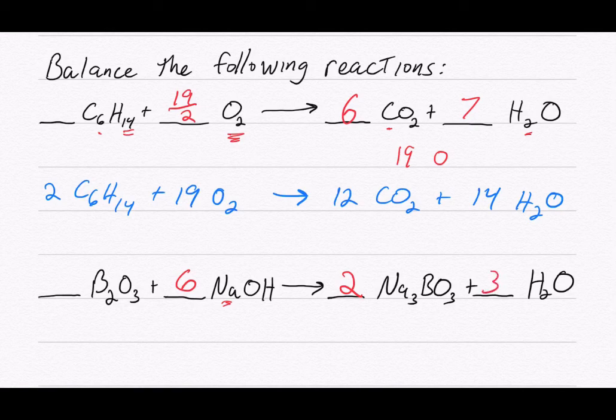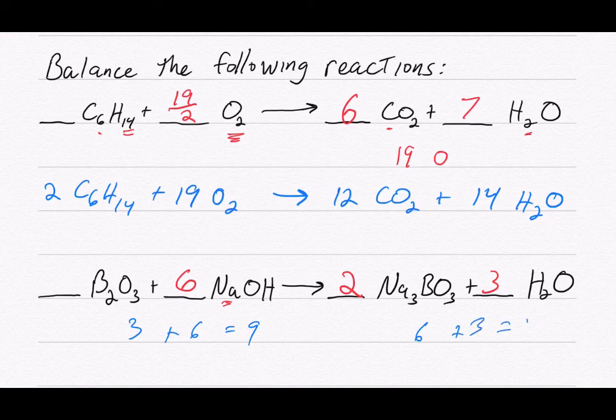Now I've got everything balanced except the oxygen, so let's check the oxygens. I've got three in the B2O3 and six from the NaOH, so that gives me nine oxygens in the reactants. Over here I've got six oxygens from the two sodium borates and three from the waters, which equals nine, so my oxygens are already balanced. That's how you work those two out. If you've got any questions, make sure you let me know.